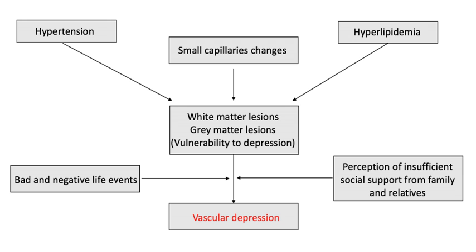Increasing severity, or magnitude, of these lesions predicts an increase in depression over time as studied in individuals who were already depressed. Additionally, lesions classified as severe demonstrate the strongest association with depression. These white matter lesions also predict future depression risk in individuals that are not currently depressed. Non-depressed participants with identified white matter lesions were eight times more likely to develop depression within the next three years compared to those without these lesions. Although the location of these lesions has been studied in connection to late-life depression, more research is needed to determine location's role in the presentation of vascular depression.